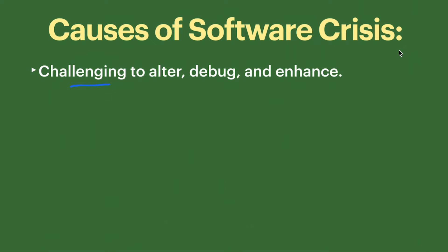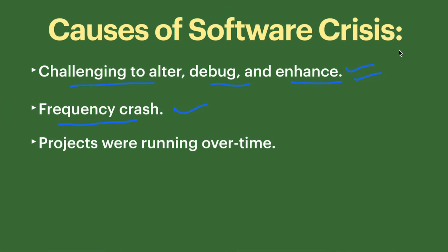Another cause is facing challenges in altering, debugging, and enhancing the software. If we are not able to change, debug, or enhance the software, that is another reason. If the software frequently crashes and is not working properly, that is also a cause. Additionally, if a project is running over time — for example, if development was planned for two years but takes longer — that is another reason for software crisis.